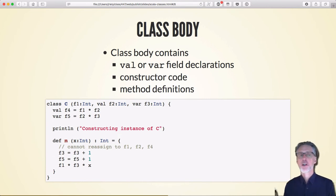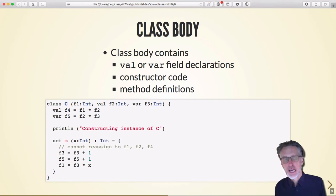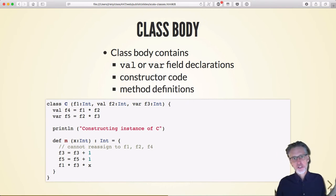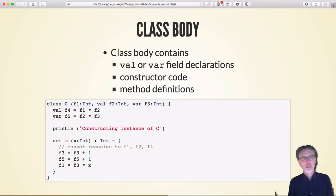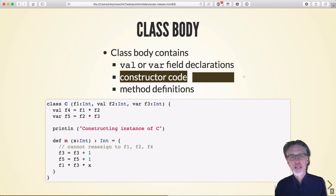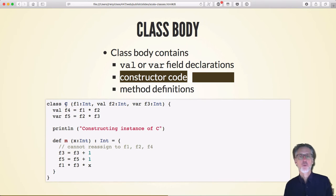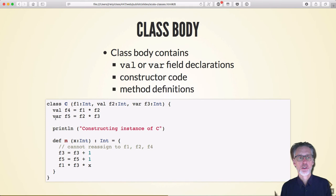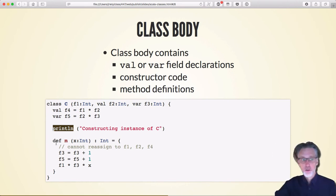After declaring class parameters, we have the opportunity to give a class body. The class body is just general Scala code — it can include declarations for vals or vars, constructors, and methods. The way constructor code works in Scala: you don't declare a separate constructor. Instead, when you instantiate the class, it runs all of the declarations and code in the body in order.